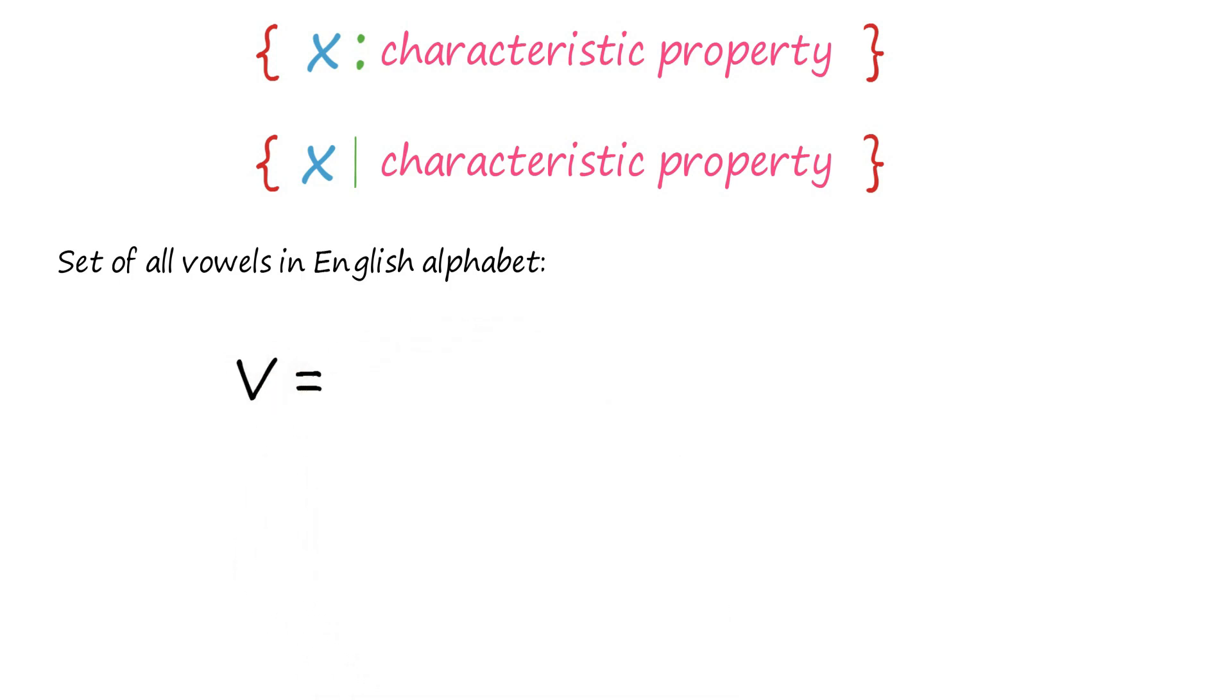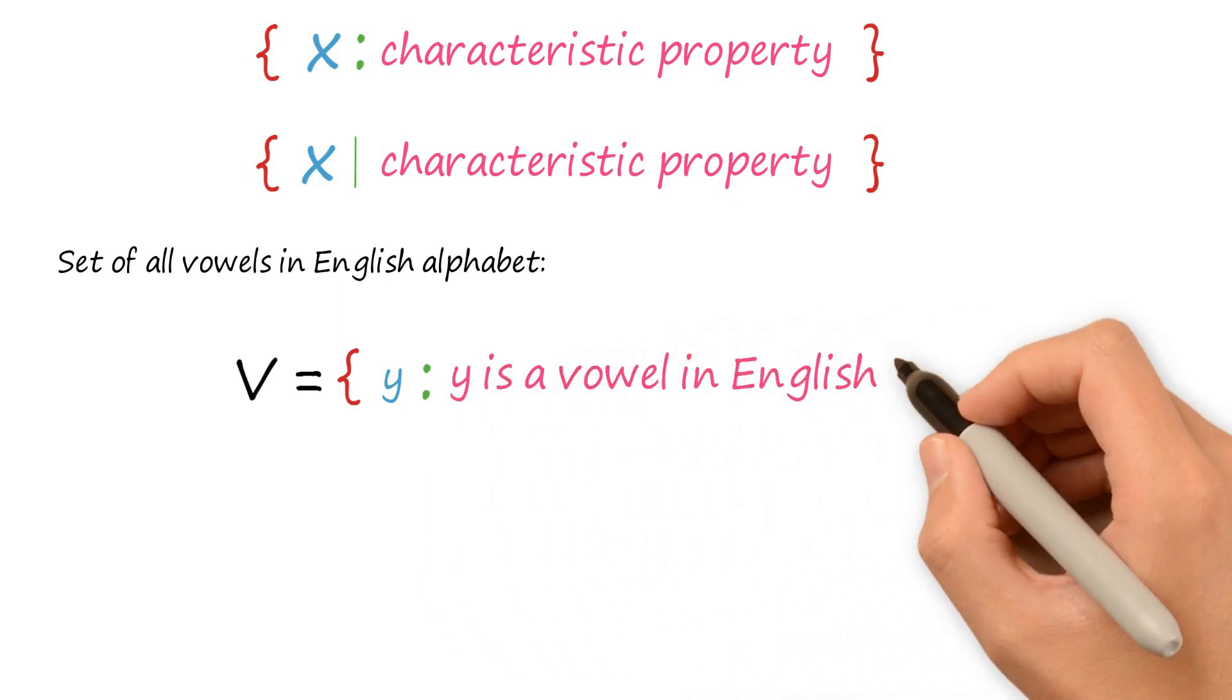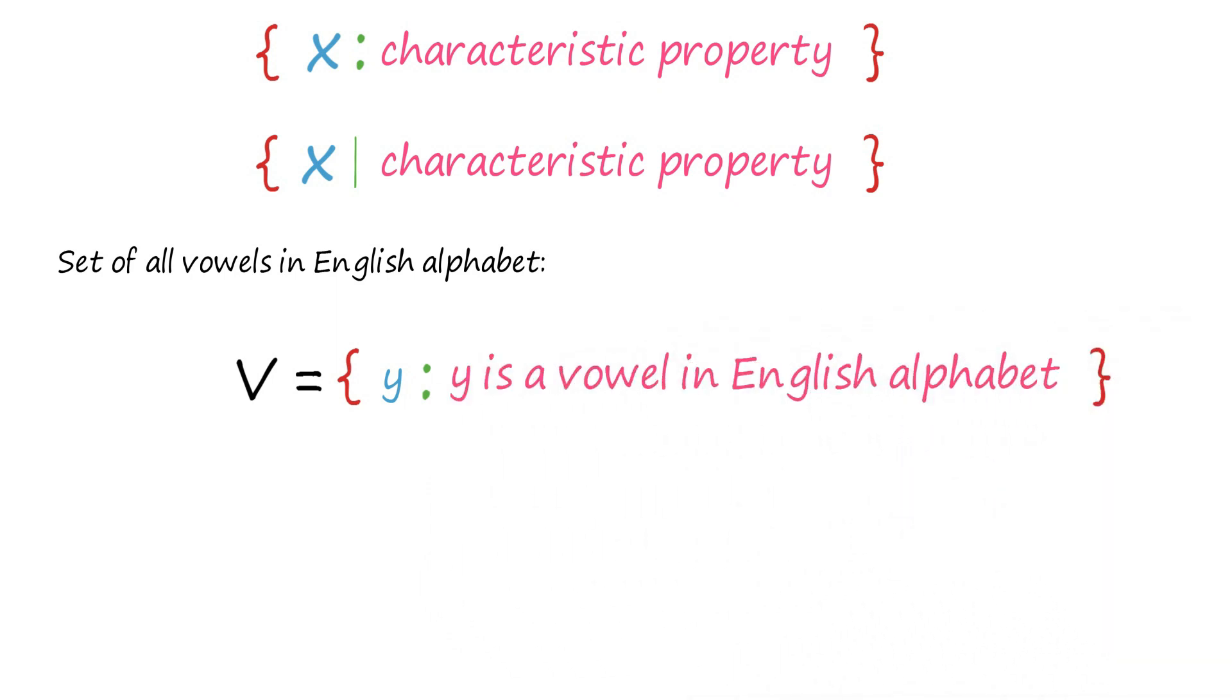Denoting the set by V, and then describing each element by y, followed by a colon, we write y is a vowel in English alphabet, which is the characteristic property of each element of this set.